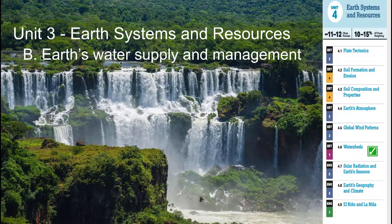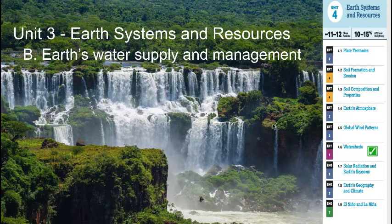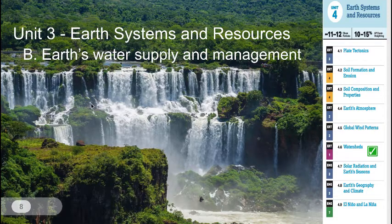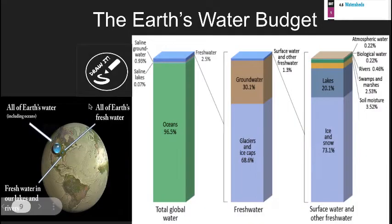Hey class, welcome back to our second set of notes in Unit 3, Earth Systems and Resources. 3B is looking at Earth's water supply and management. The specific criteria here is going to focus on watersheds, but a little bit more about what the Earth's water budget is — how much water is on the Earth and things we do to try to maintain that supply.